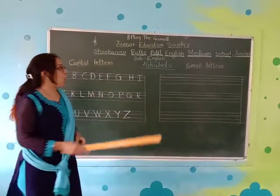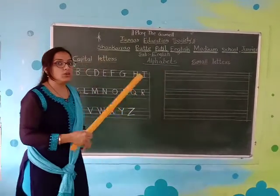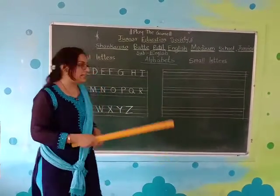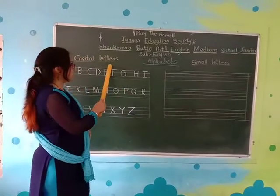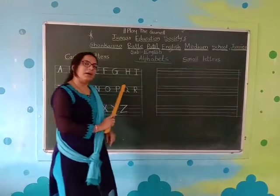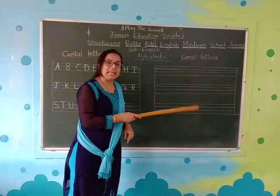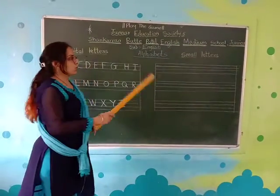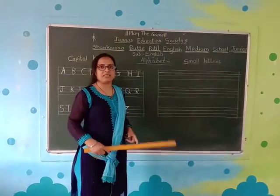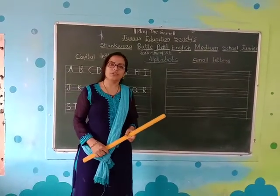So these are called alphabets. There are two ways in which we can write the alphabets: the capital letters and the small letters — the mama letters and the baby letters. So we are going to learn today how to write the baby letters. But before that, let us take a short revision.